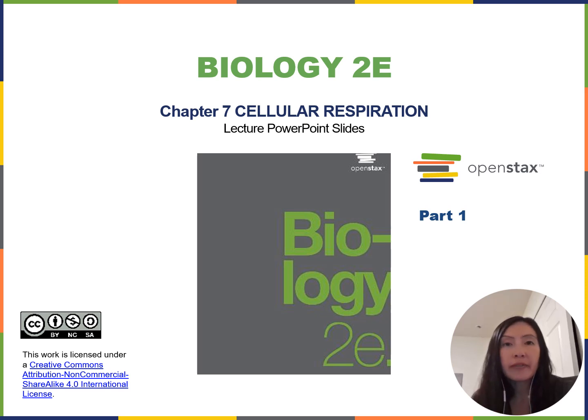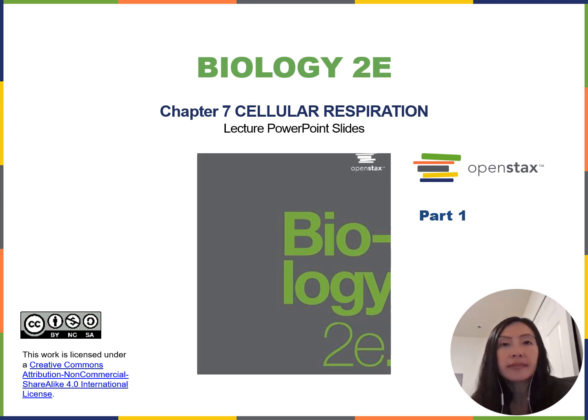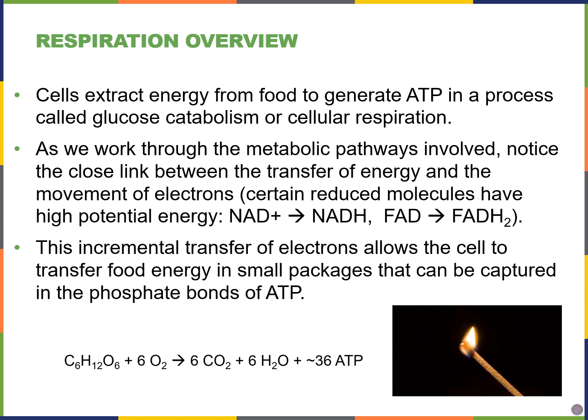Hi everyone and welcome to chapter 7. In this chapter we're looking at cellular respiration, or the metabolism of glucose to generate energy, usually in the form of ATP, to power the different types of reactions in our cells. One of the main reasons we eat is to get energy. We eat carbohydrates like glucose, and the potential energy stored in the carbon-carbon bonds within glucose can be released to power biochemical reactions inside cells, or saved later as ATP.